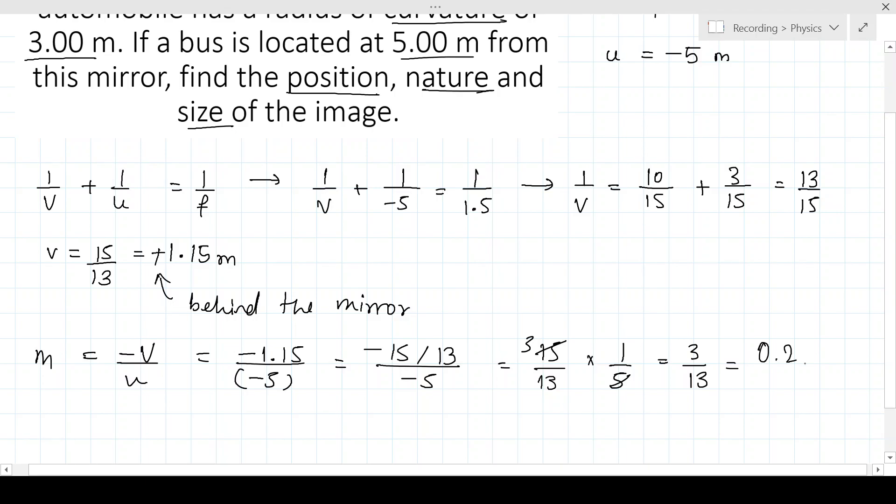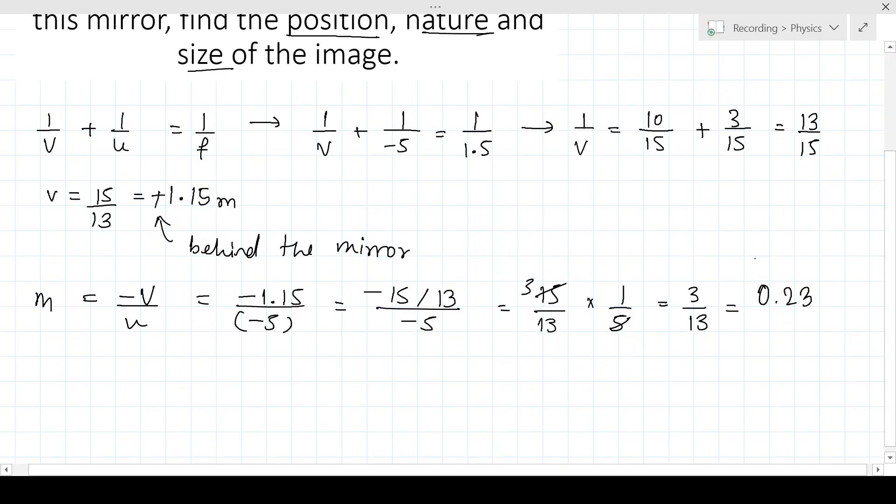Now 0.23, it is positive, that tells us the image is virtual and erect. And here 0.23 is less than 1, that means it is smaller in size.